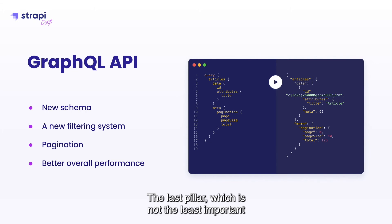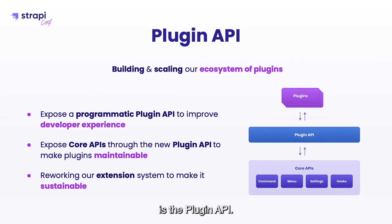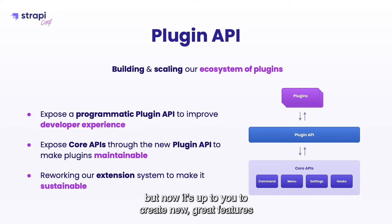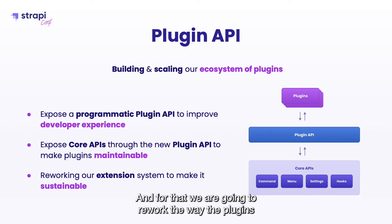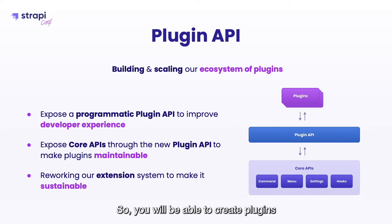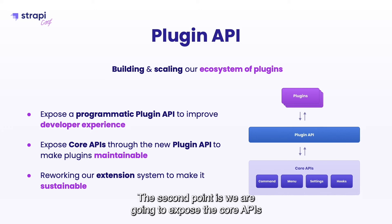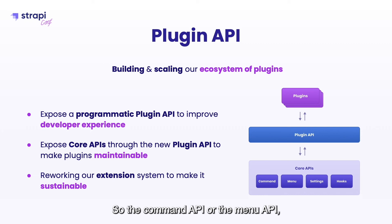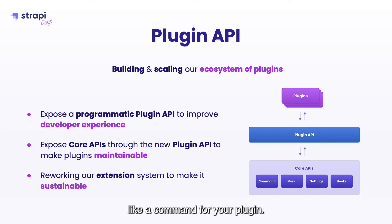The fourth pillar, which is not the least important, is the plugin API. We've got great features, a new DB format, and content APIs flexible enough to create new features — now it's up to you to create new great features for the community and your own needs. We are going to rework how plugins can be created. First, we'll introduce a programmatic API to create plugins in a more flexible and stable way. Second, we'll expose the core APIs — such as the command API or the menu API — so plugins can interact with them and you can expose a command for your plugin.